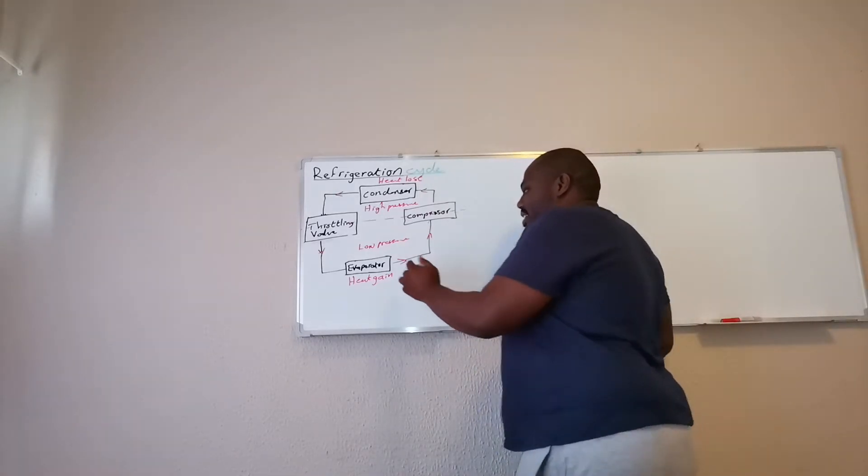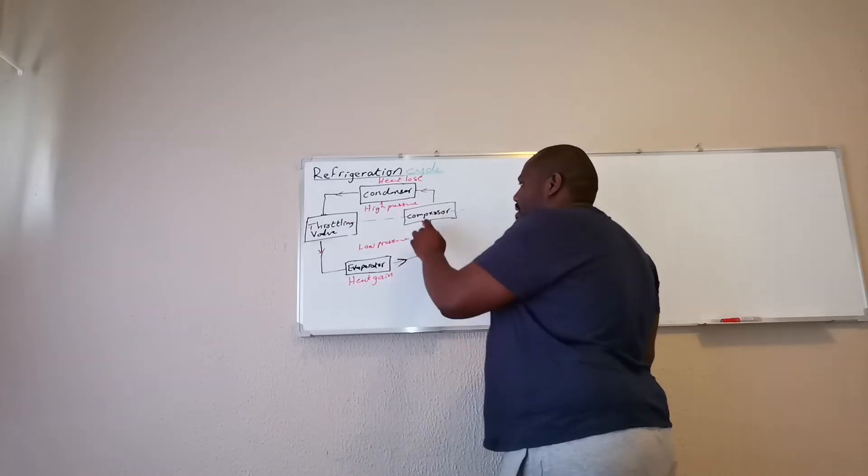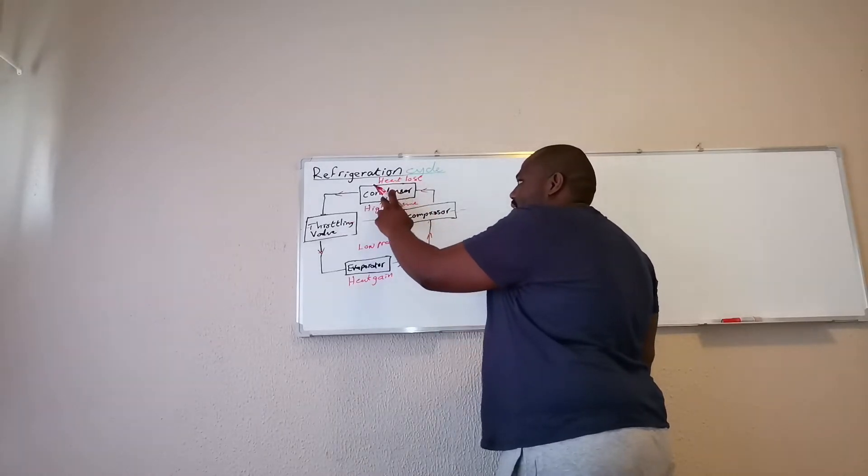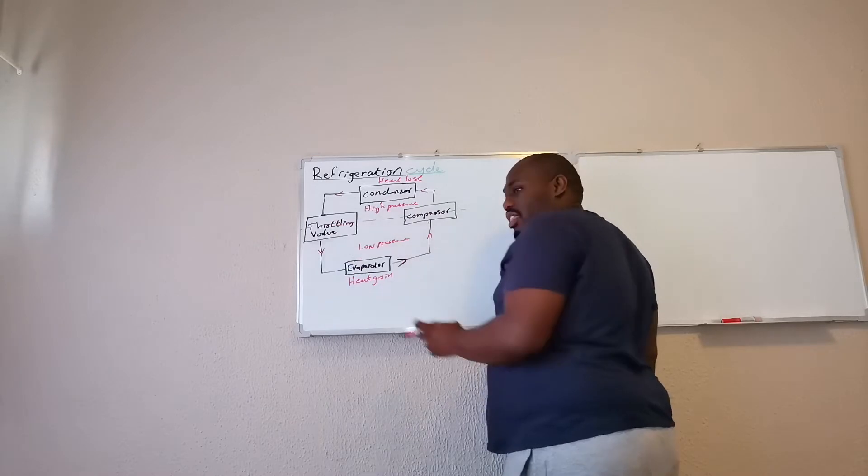So we have an evaporator, we have a compressor, we have a condenser and we've got a throttling valve.